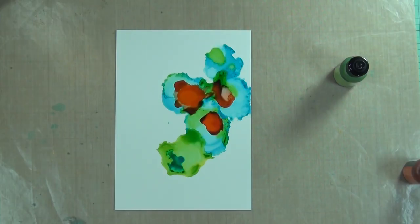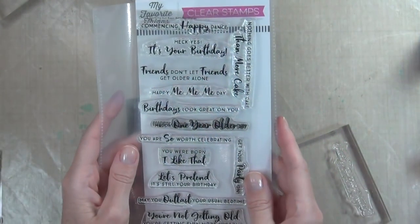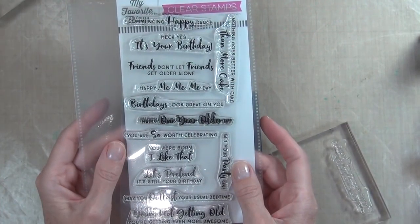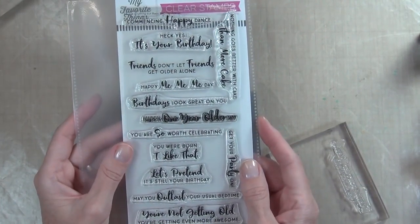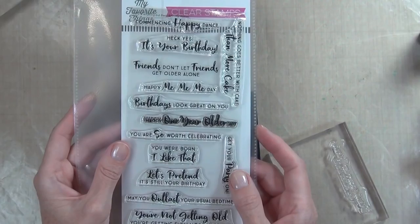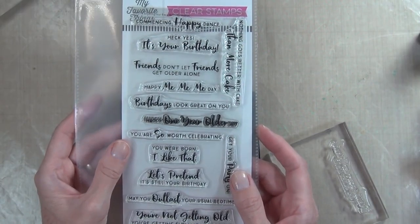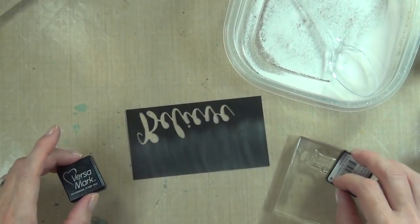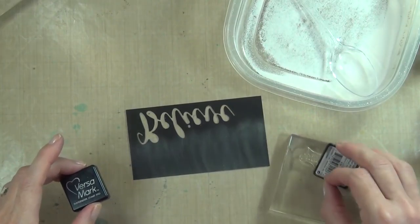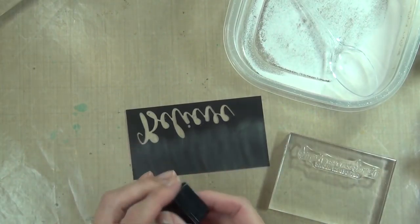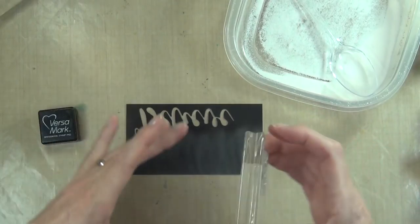My sentiment today comes from an MFT set which is called Anything But Basic Birthday Wishes, and it has some really fun sentiments. I'm going to white heat emboss this on some black cardstock, and I've prepped this cardstock really really well, can you tell, with some powder.